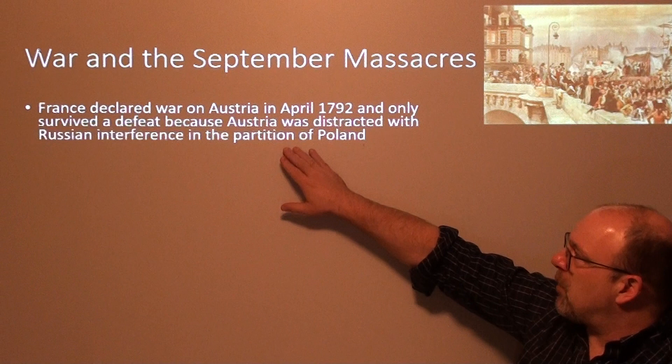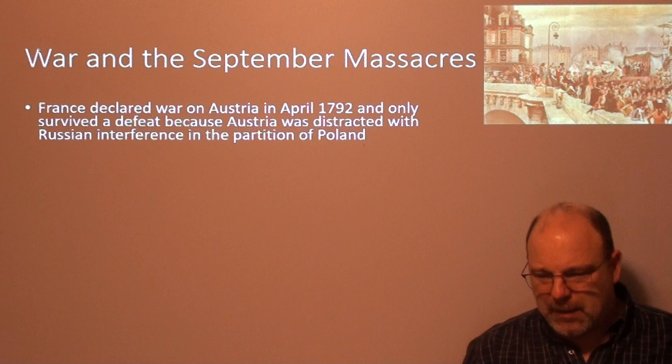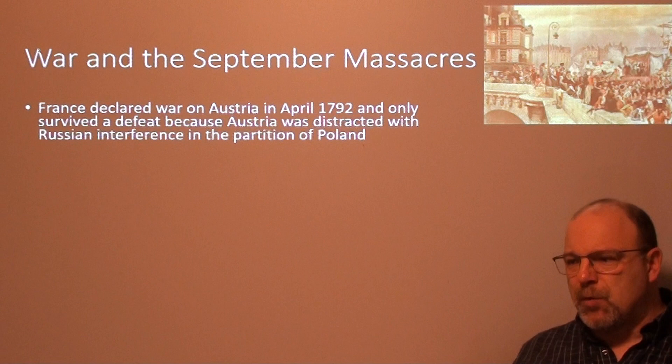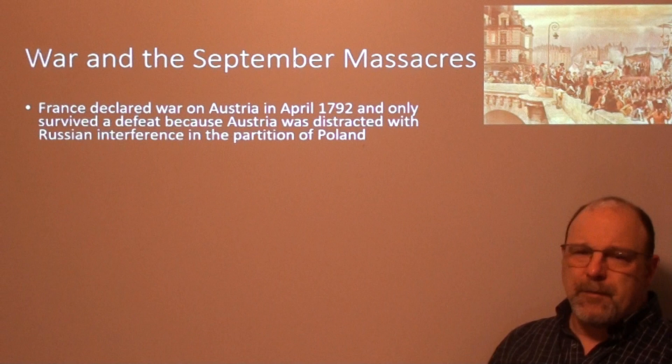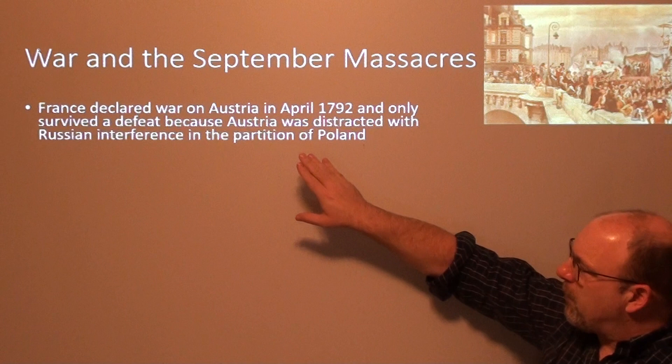France declared war on Austria in April 1792 and only survived defeat because Austria was distracted by Russian interference in the partition of Poland. Germany wasn't yet unified — it was the Holy Roman Empire, and it would not become unified national imperial Germany until 1871. Poland had a very difficult past with the Russians. There was a lot going on in Europe that worked to France's advantage.